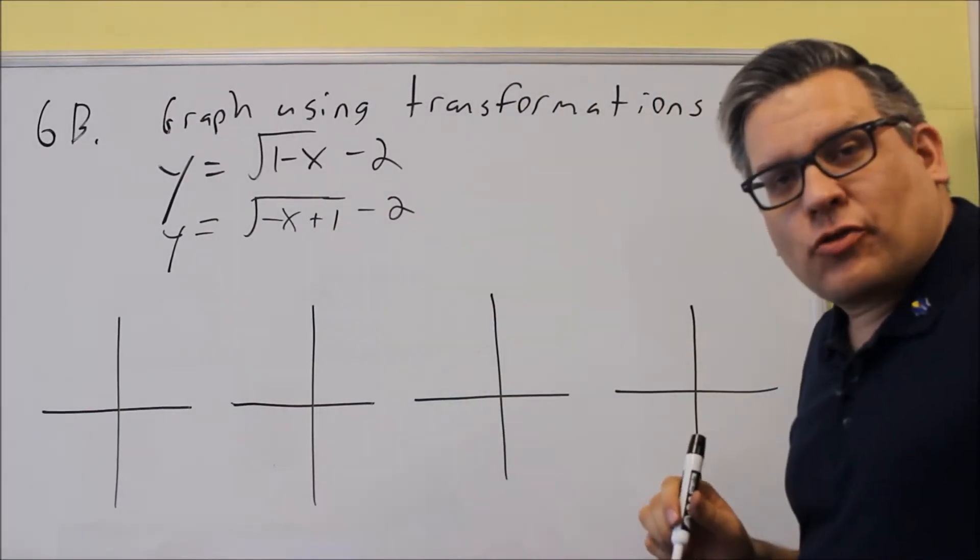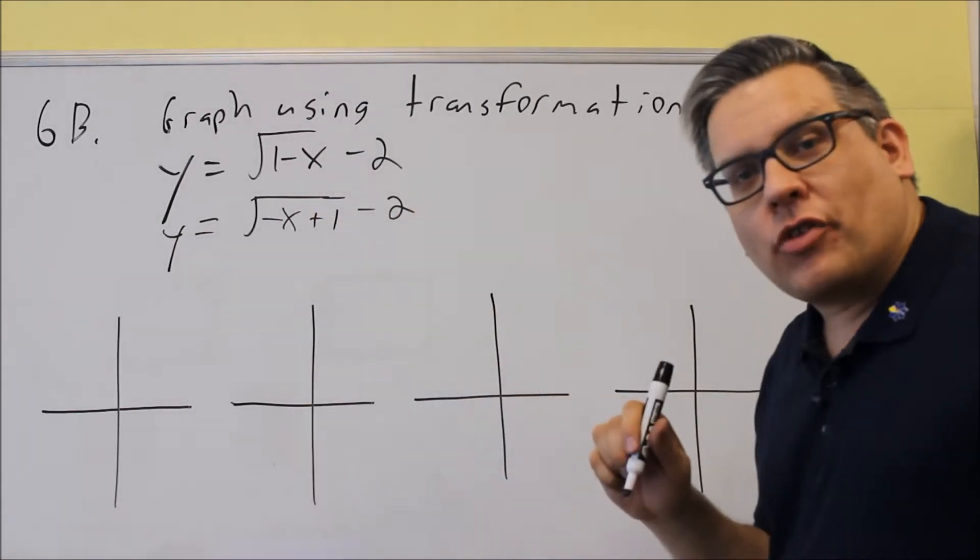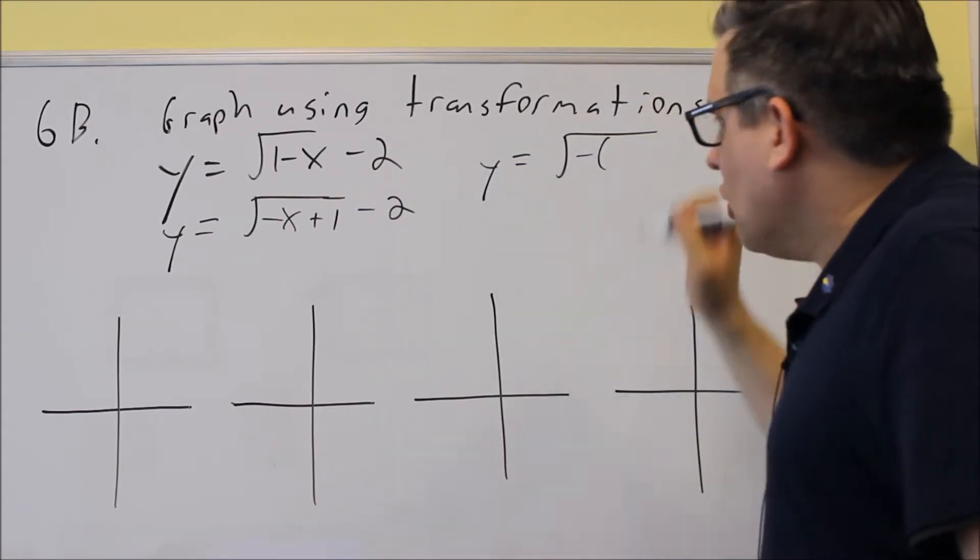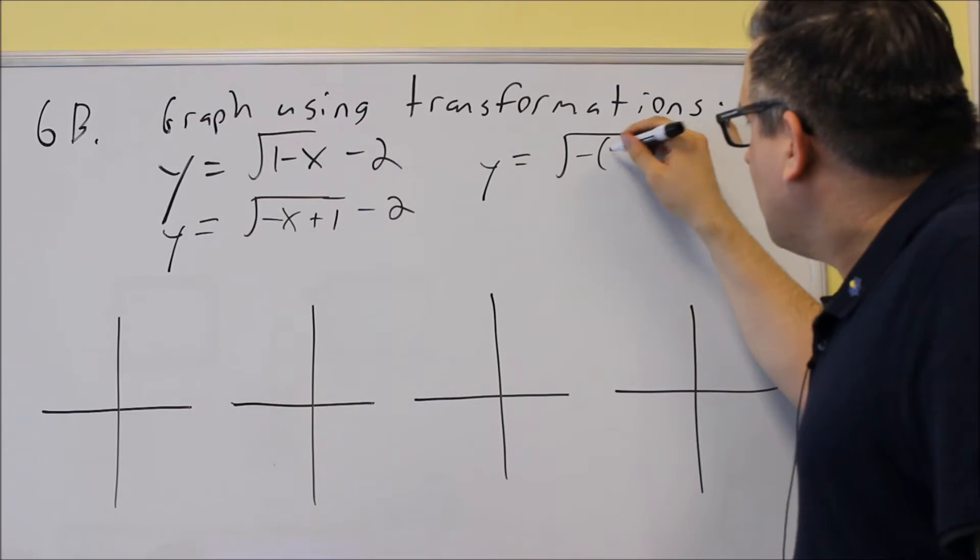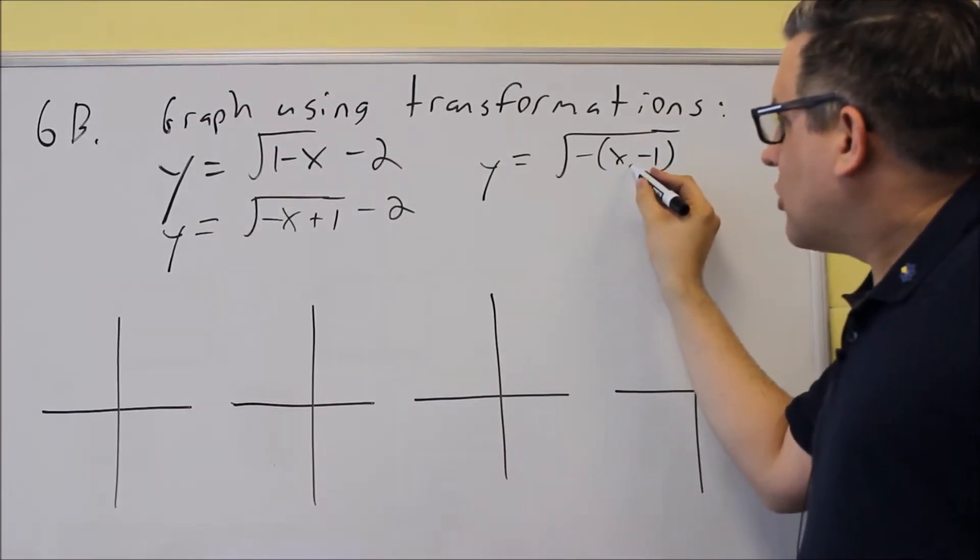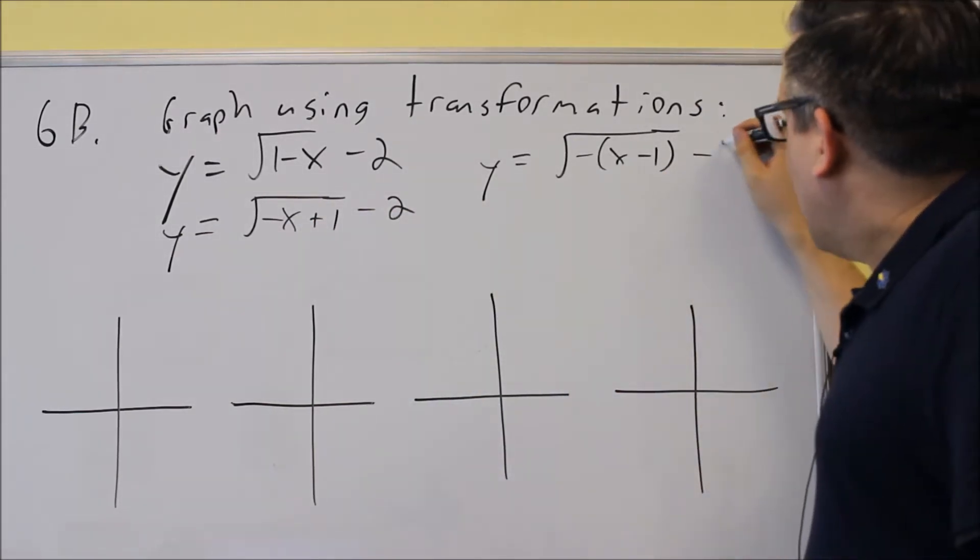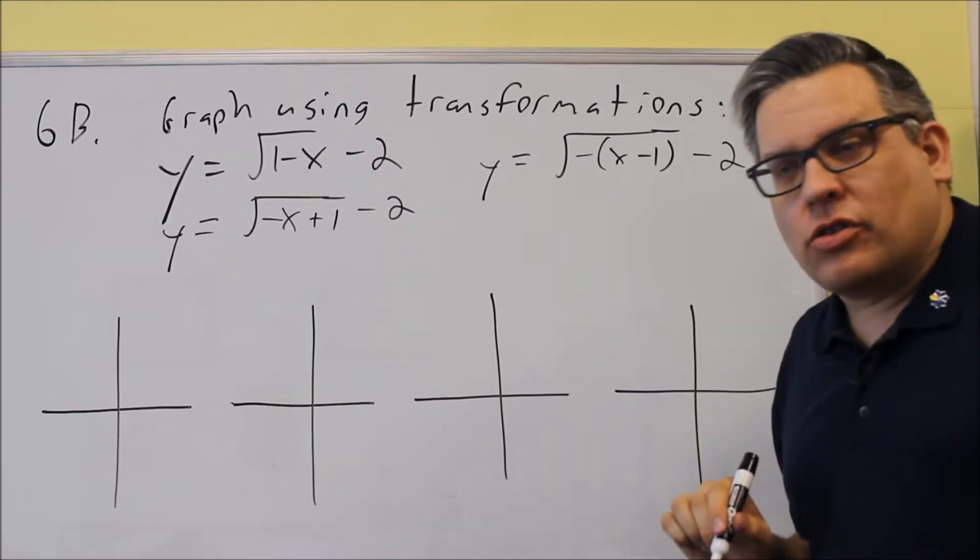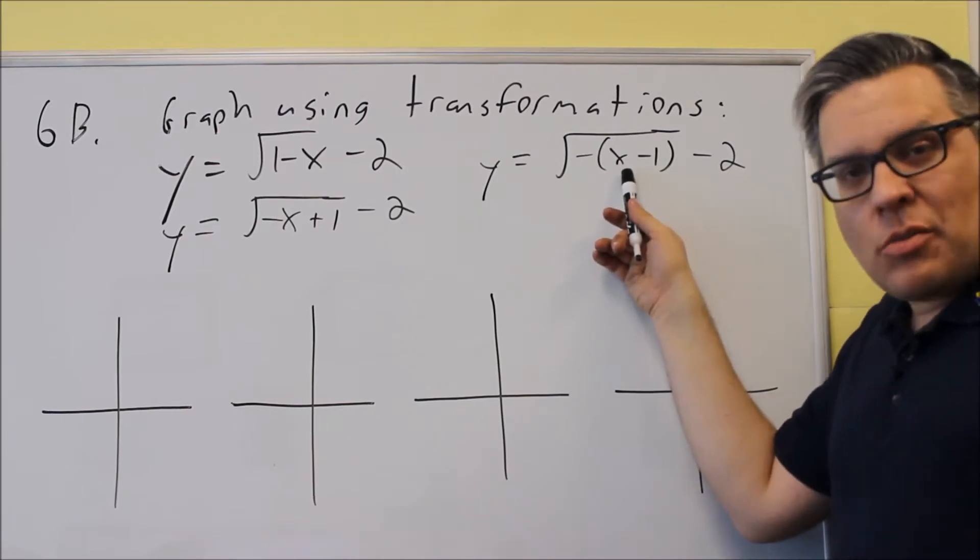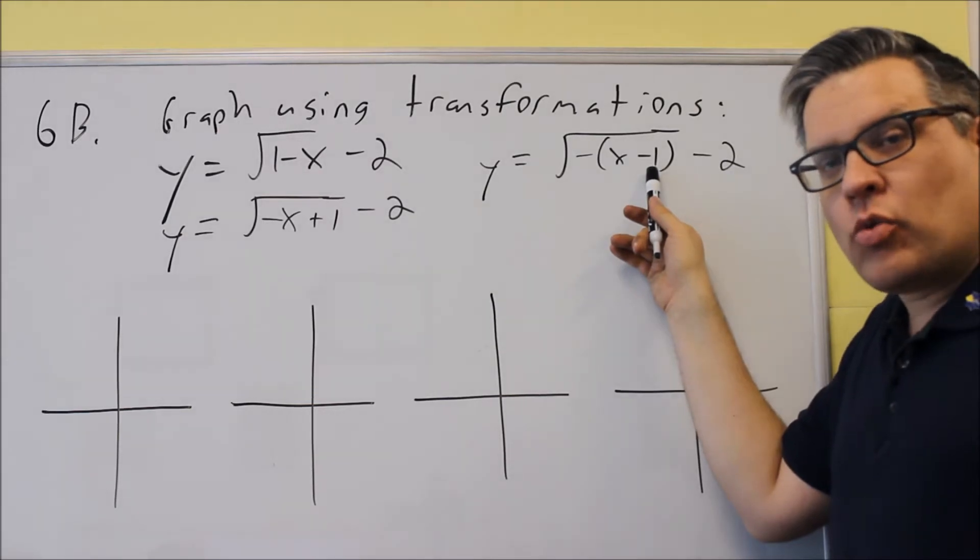But it's still not good enough because for transformations to work, the x has to be by itself with nothing in front of it. So we're going to do one more step. We're going to factor out a negative here and you get negative square root of x minus 1. So we take a negative out, that's basically going to switch these two signs. And the one on the outside, that's still going to be a negative 2. So the reason why we did that first is because now we see the x comes first, but notice now that we have a negative 1. So this time we're going to be moving it to the right.